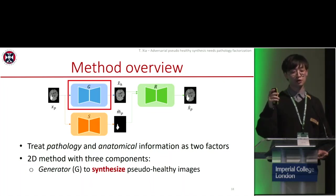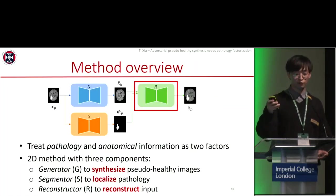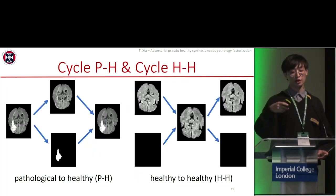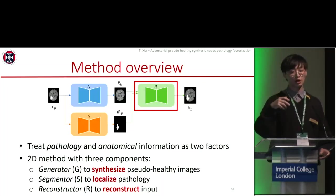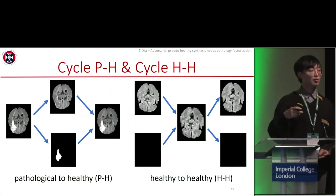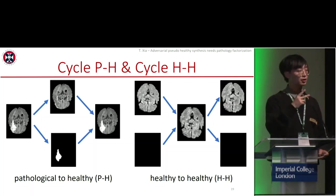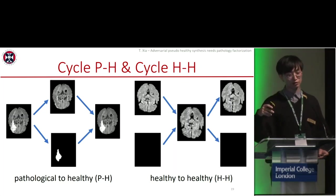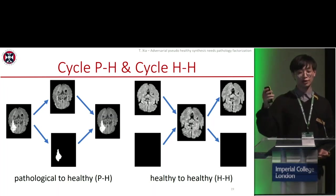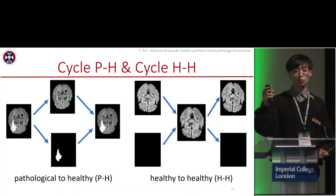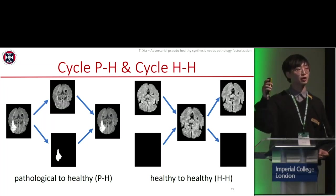The first component is a generator to synthesize pseudo-healthy images, followed by a segmenter to localize the pathology, and then a reconstructor to reconstruct the input from the pseudo-healthy images and the mask as a way to preserve identity. Within our method, we have two training cycles. The first cycle is called cycle P2H, where we start from a pathological image and get a pseudo-healthy one and a mask, and then reconstruct the input using these two products. Cycle H2H is mainly designed to preserve identity, where we start from a healthy image and a black mask.